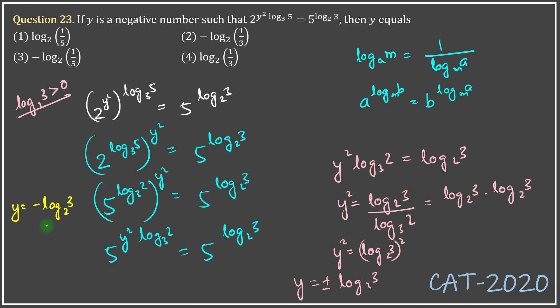However, you would notice that none of the answer options are in this form. So, what I can do is use another law of logarithms and say logarithm this is minus 1. So, minus 1 log 3 to the base 2 is the same as log of 3 to the power minus 1 to the base 2 or log of 1 over 3 to the base 2. A simple application of logarithms and a very beautiful question. The correct answer is answer option 4.